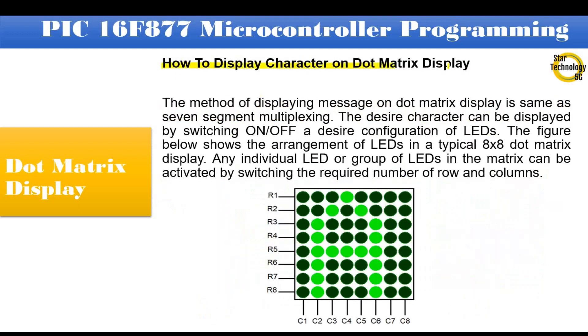How to display character on dot matrix display. The method of displaying message on dot matrix display is same as 7 segment multiplexing. The desired character can be displayed by switching on off a desired configuration of LEDs. The figure below shows the arrangement of LEDs in a typical 8x8 dot matrix display. Any individual LED or group of LEDs in the matrix can be activated by switching the required number of rows and columns.